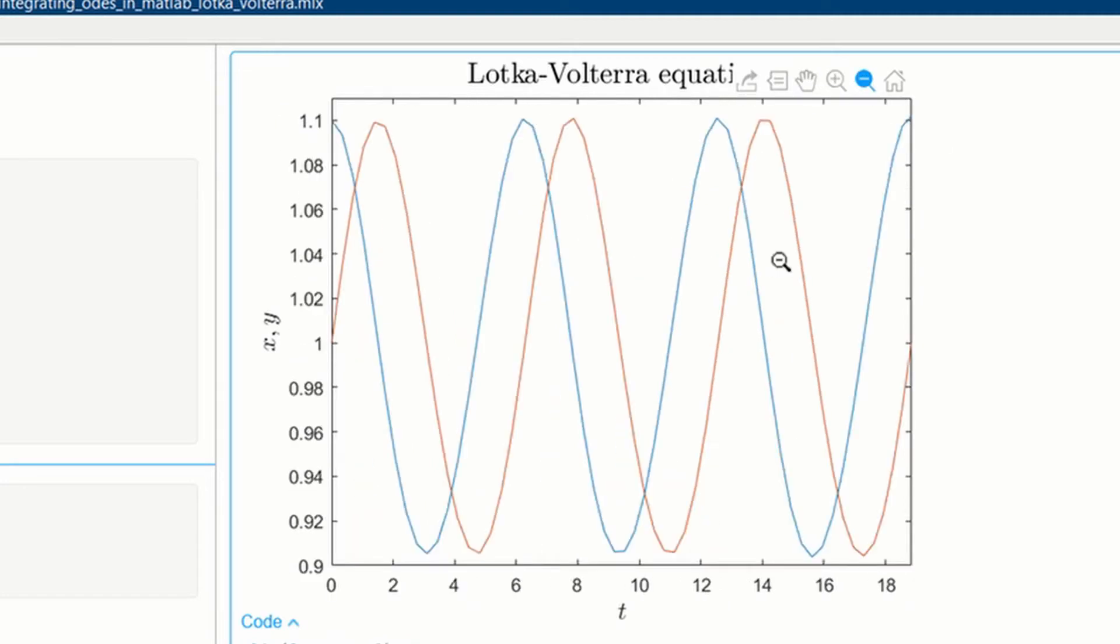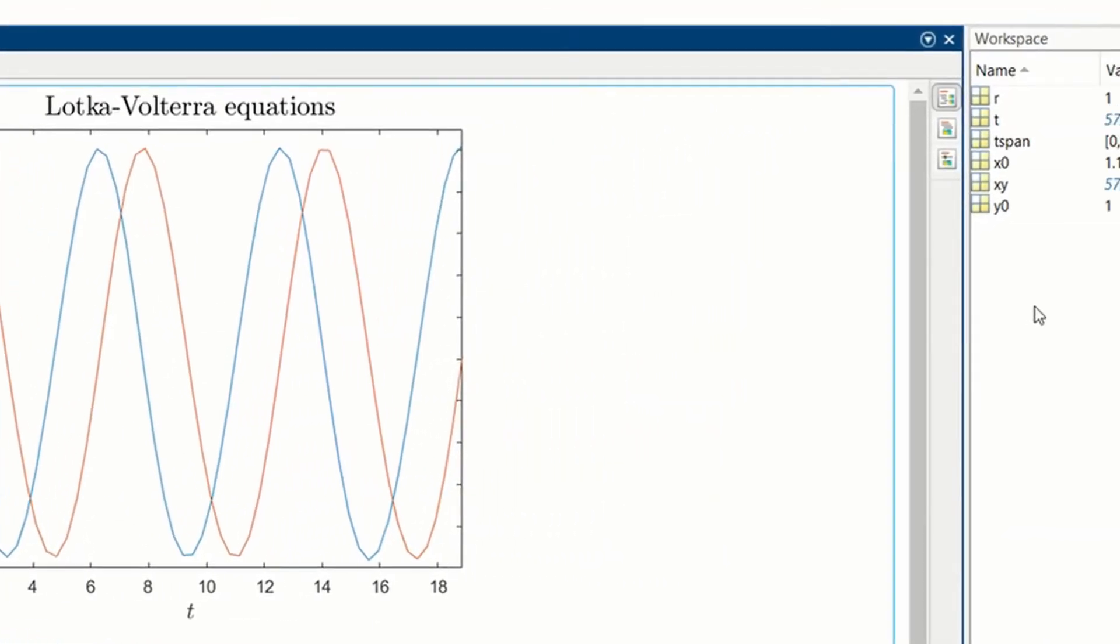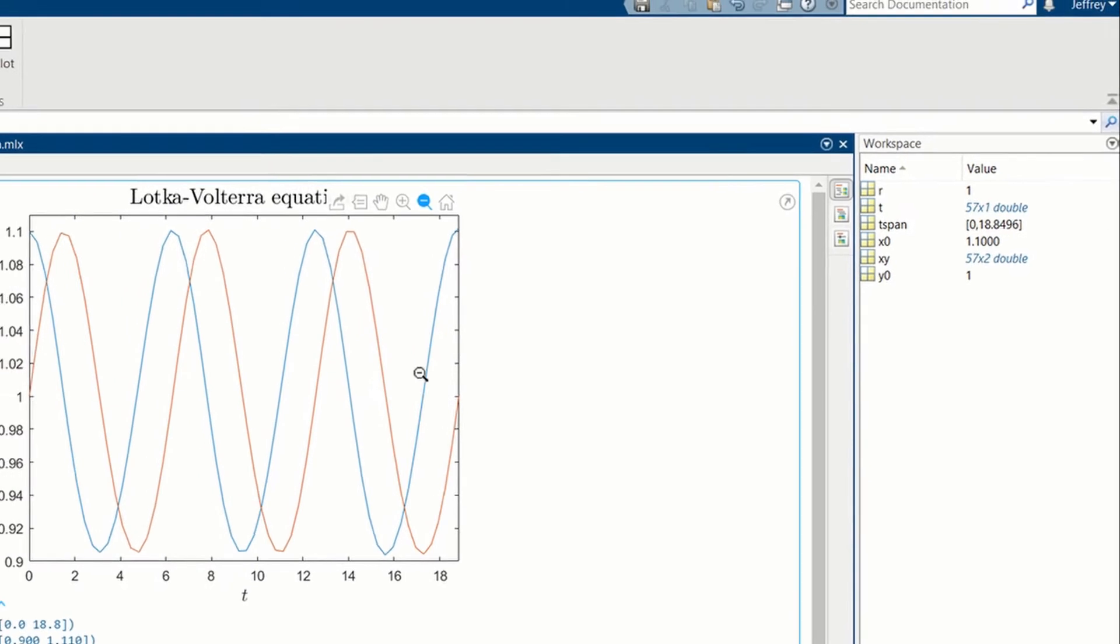That could be an interpolation error. If we look over in the workspace, we see that x, y is 57 by 2. So there's only 57 points being plotted. T is 57 by 1. So 57 points is not enough points here.